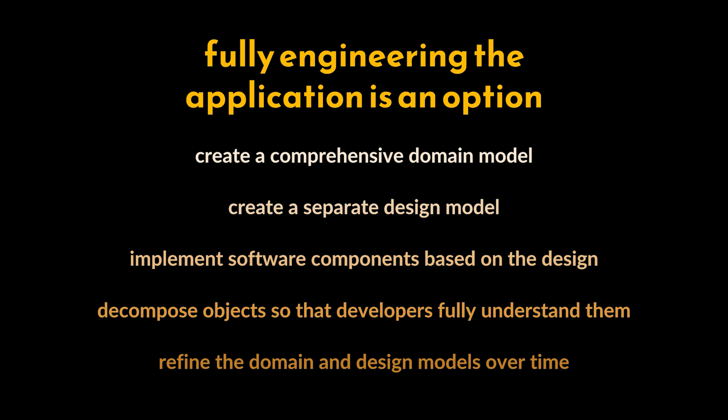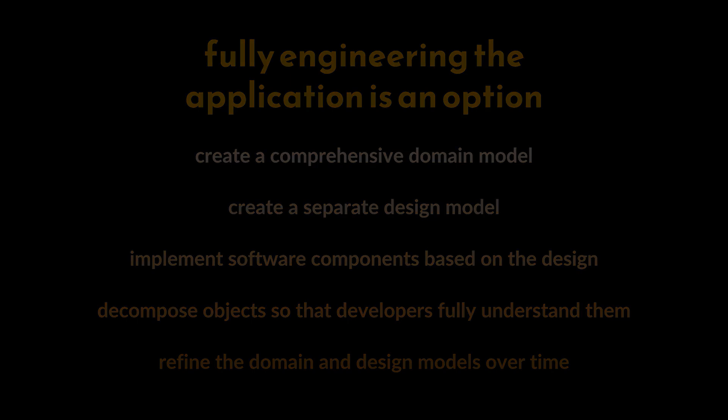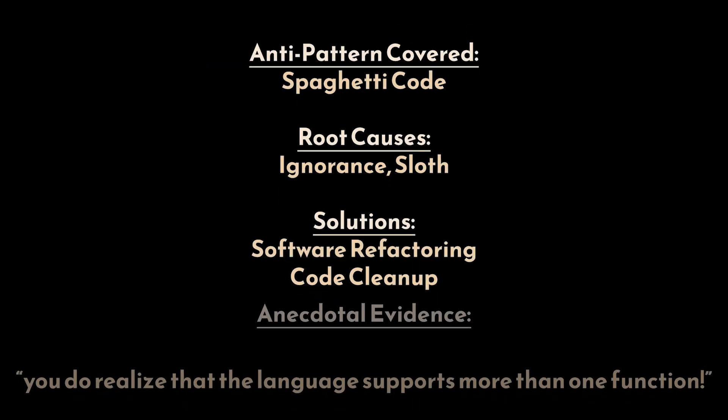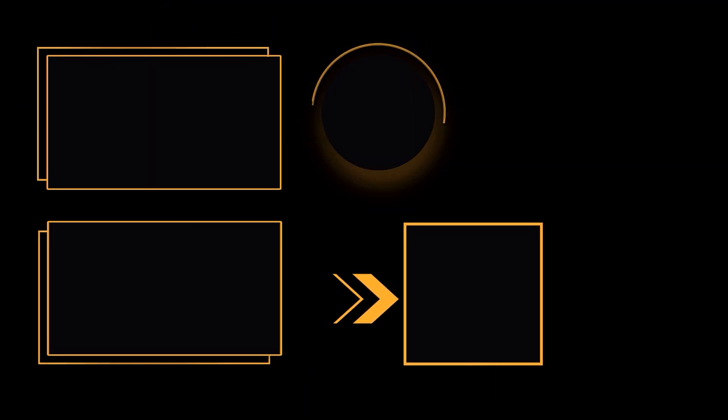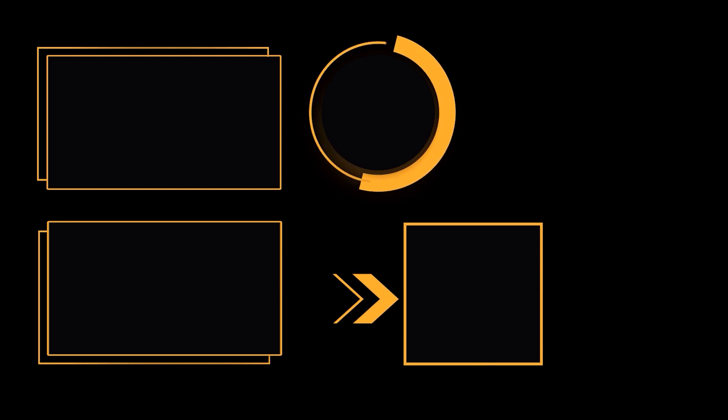Finally, keep in mind that clean code is not a one-time deal but an ongoing process. Refine the domain and design models over time to accommodate evolving requirements, design decisions, and implementation challenges. To sum up, spaghetti code — born of ignorance and sloth — is a coding anti-pattern whose remedy lies in diligent software refactoring and code cleanup. It's like realizing a programming language can do more than one thing while keeping the code clear and understandable. Thanks for watching — take care and see you in the next one.